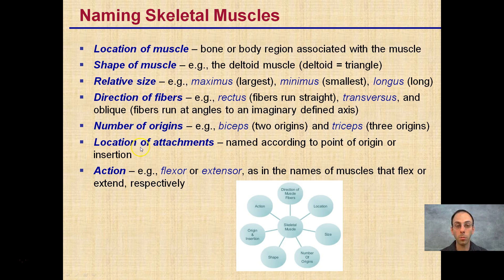Location of attachments also contributes to naming — a muscle is named according to its point of origin or insertion. And the action of the muscle matters as well, such as flexor or extensor, names given to muscles that flex or extend respectively.